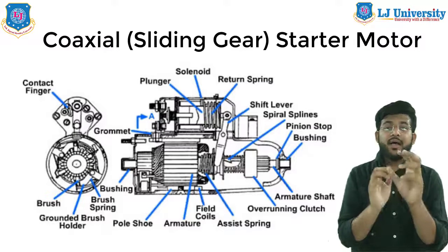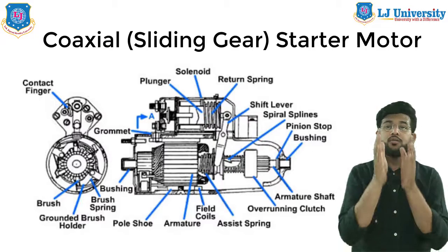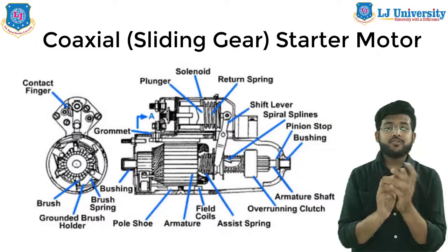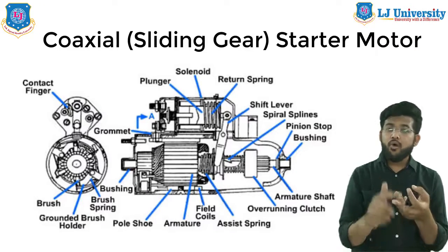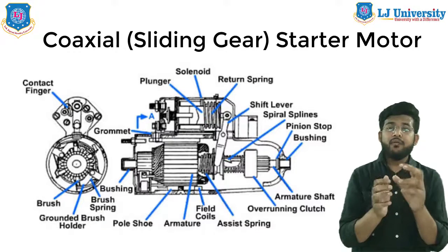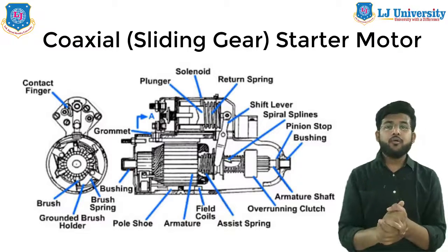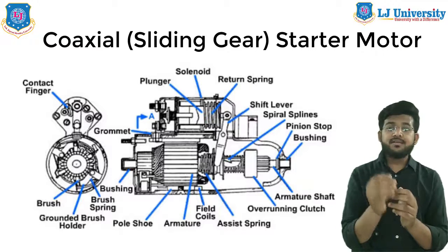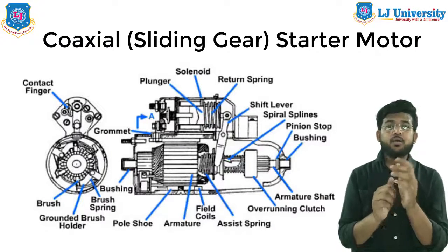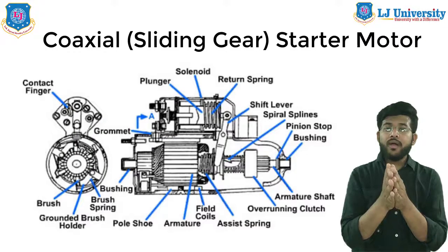This concludes our discussion on axial and coaxial drives in starter motors. In previous sessions and this session we covered the Bendix drive, pre-engaged type drives, coaxial drives, and axial drives. If you have any queries, please let me know in the comment section and I will respond as soon as possible. In the next lecture we will discuss cold starting devices used in cold conditions, such as glow plugs and choke. I hope you liked this video — stay tuned and thank you, goodbye.